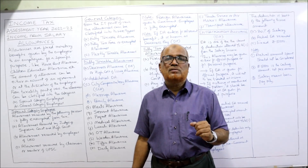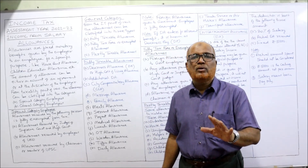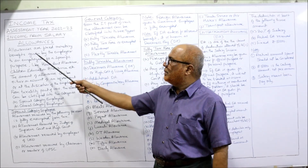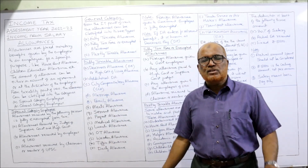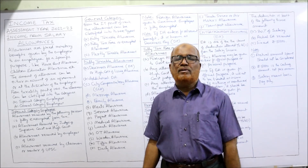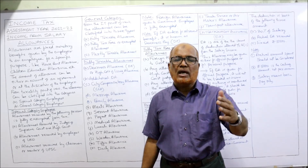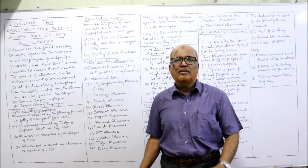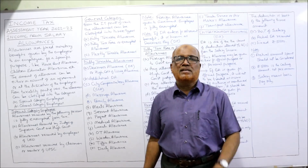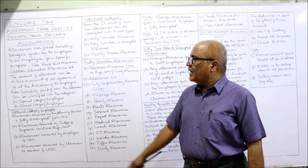If you watch the video you will be able to attempt theory questions as well. Allowances are a fixed monetary benefit given by the employer to the employee for a specific purpose — like entertainment allowance, house rent allowance, children education allowance, meal allowance, lunch allowance, and medical allowance. These fixed amounts are given along with the basic salary.